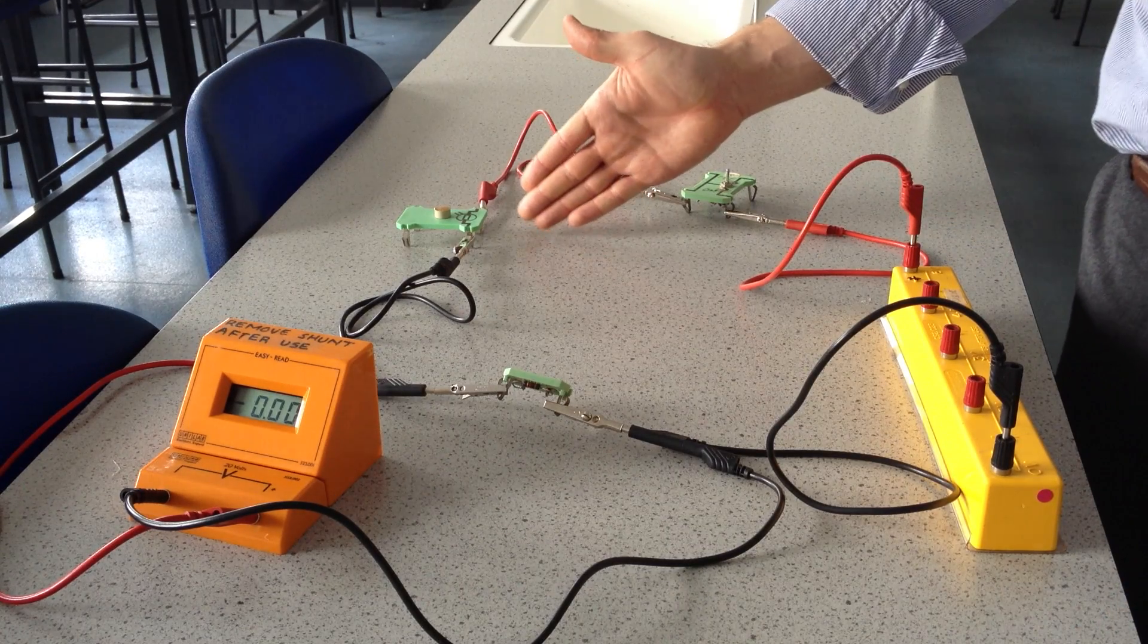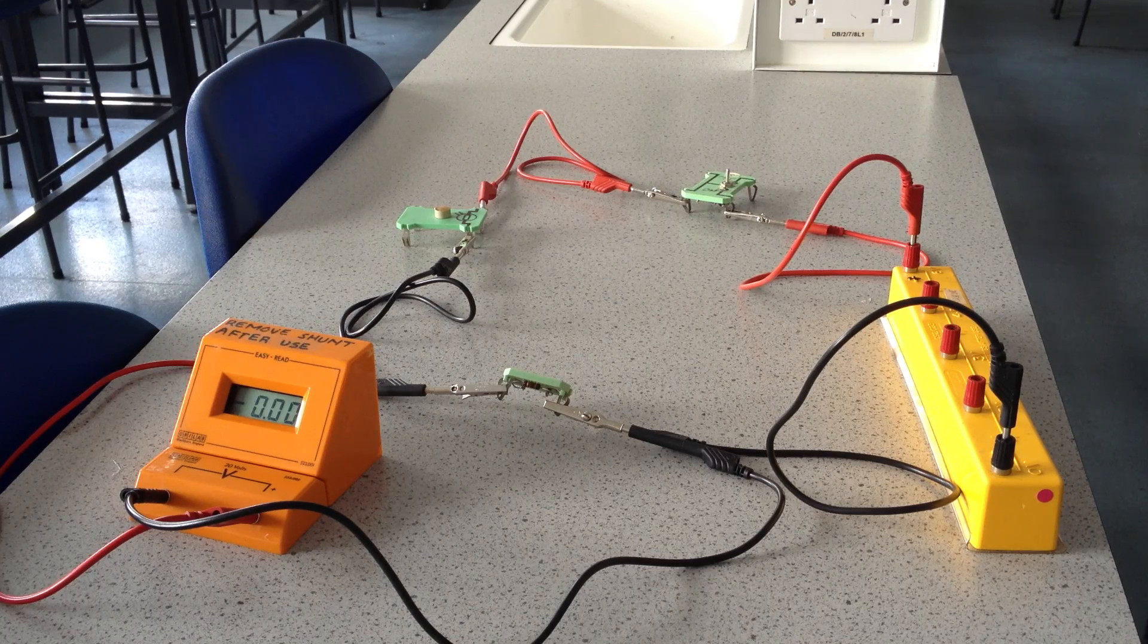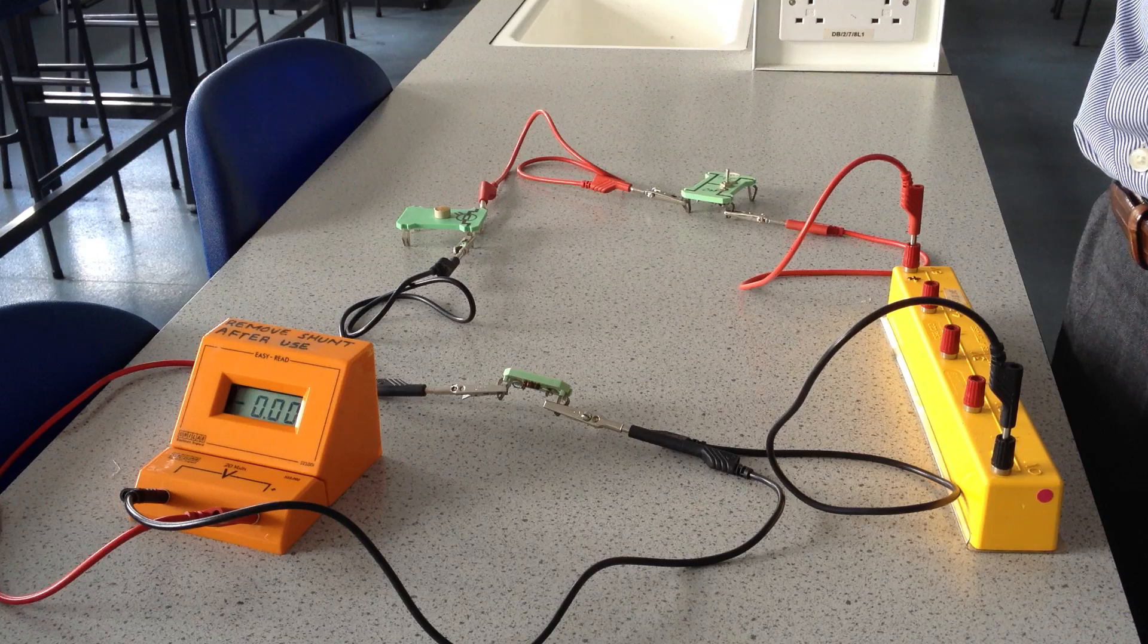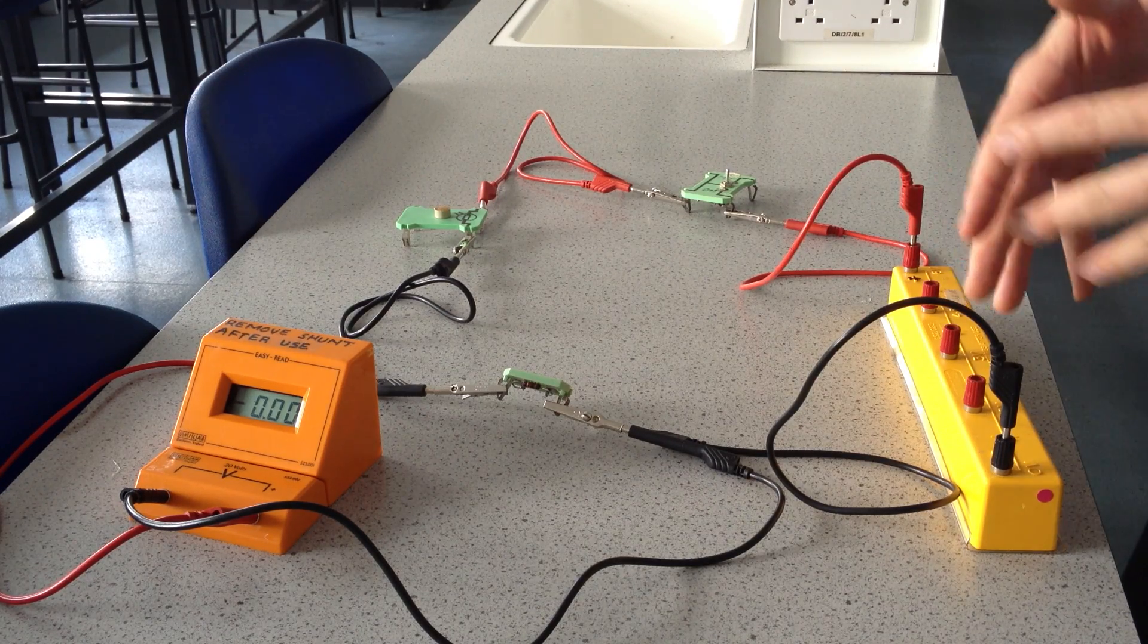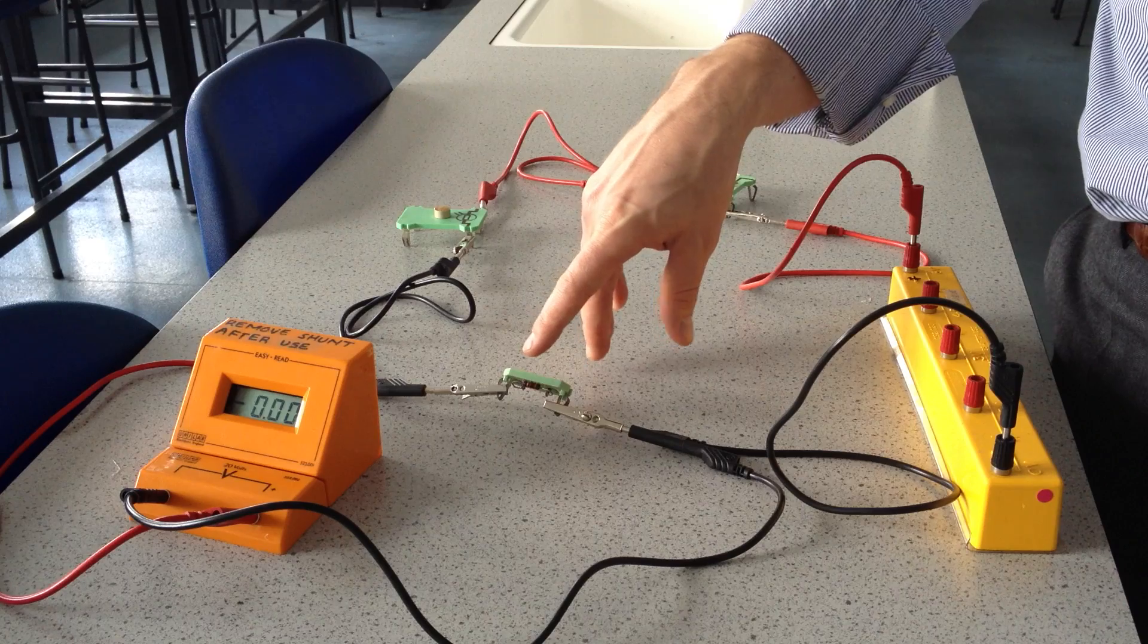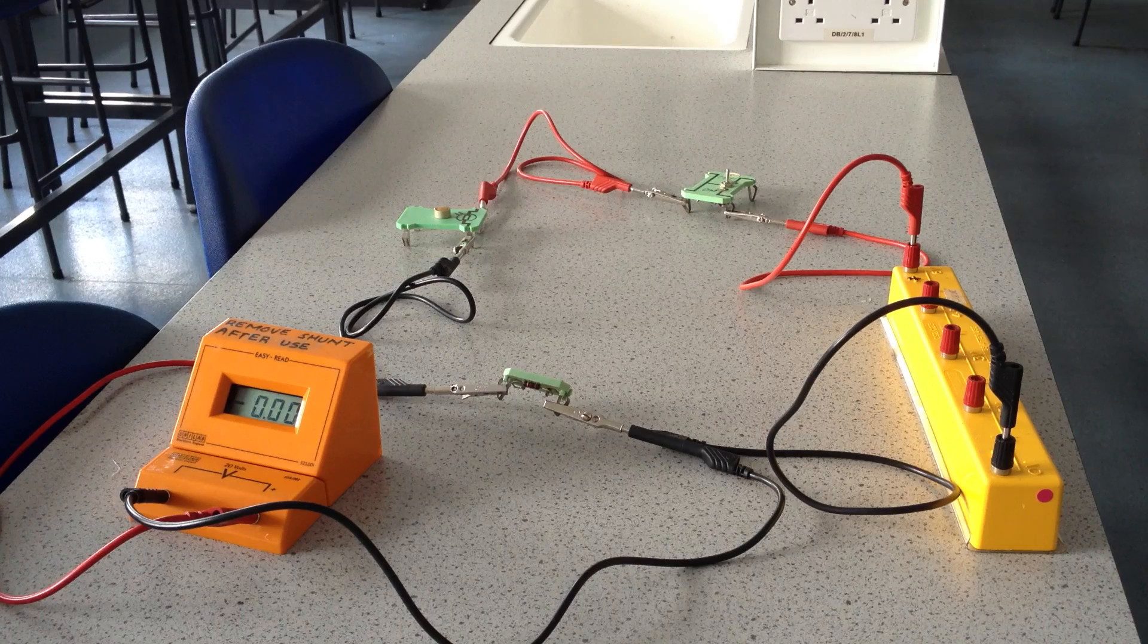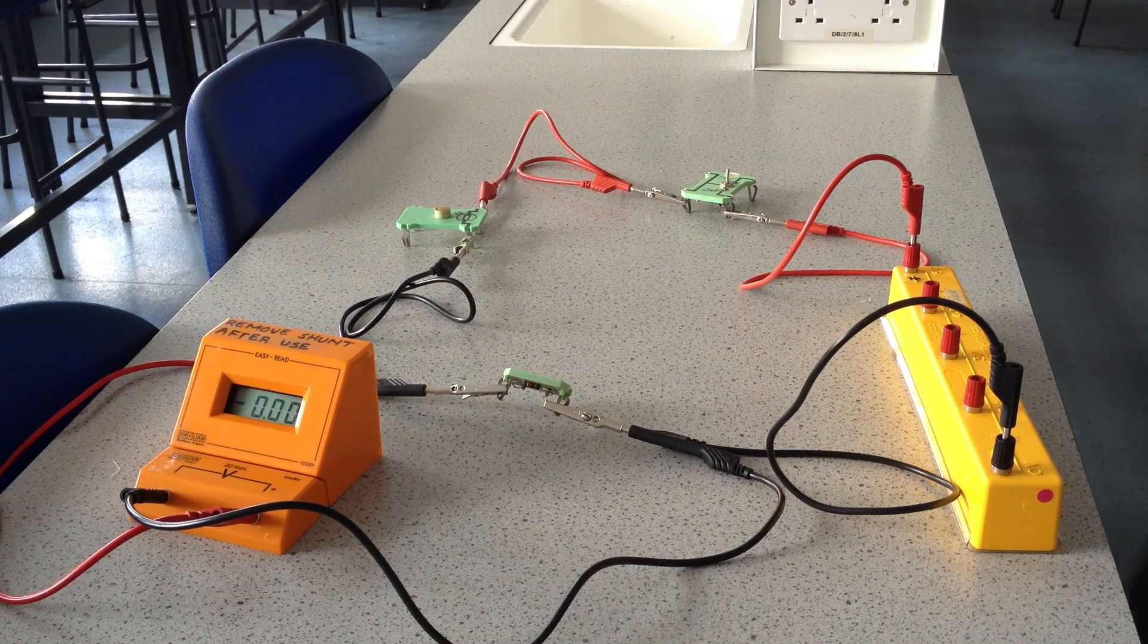When I increase the light intensity across the LDR, its resistance decreased. And its voltage share from the supply decreased. That voltage, in order for the total voltage to remain constant, roughly equal to that of the supply, the voltage across the fixed resistor had to increase. And then it went back up to 3.8 volts.